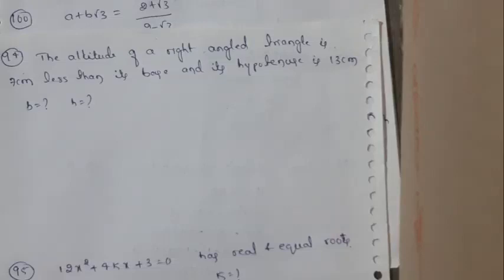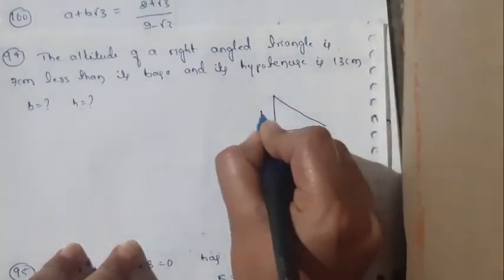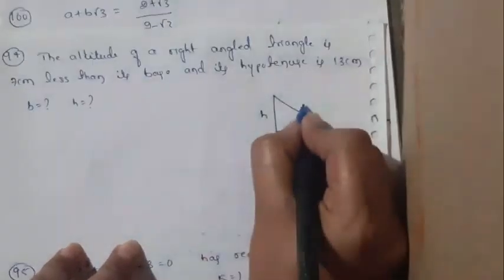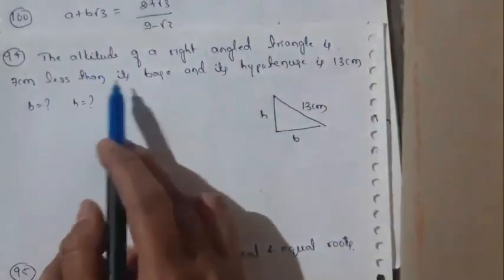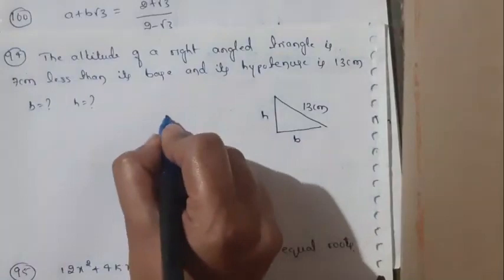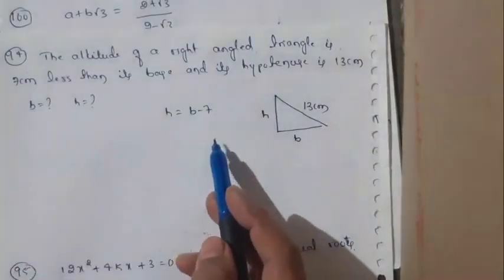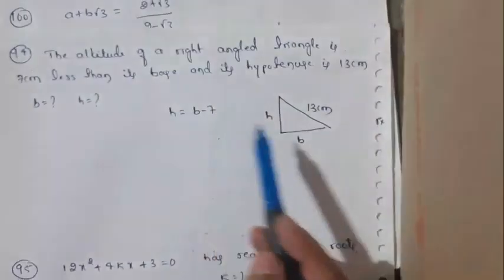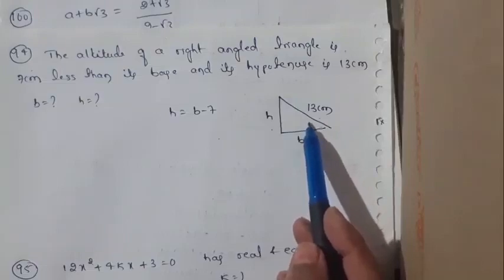Question 4: The altitude of a right-angled triangle is 7 cm less than its base, and its hypotenuse is 13 cm. We need to find the base and height. Let base = b and altitude = h = b − 7. Hypotenuse = 13 cm. We will use the Pythagoras theorem to solve this.